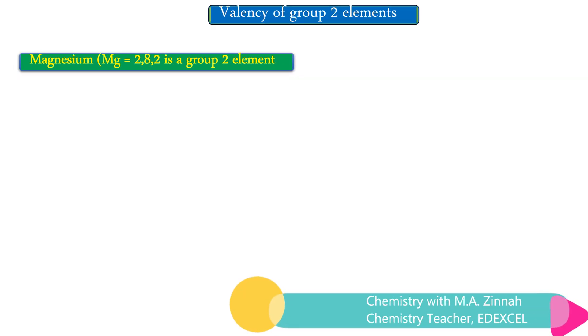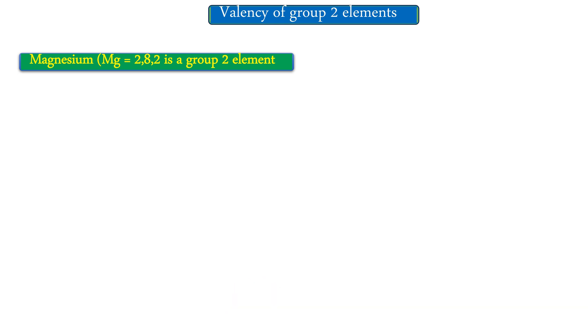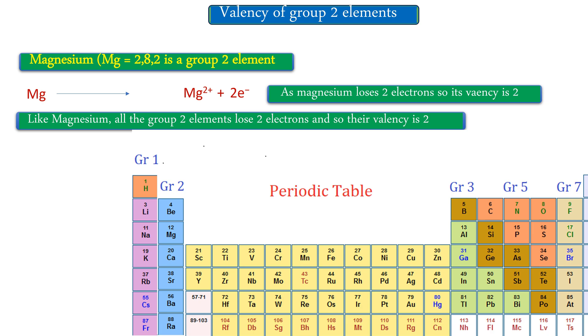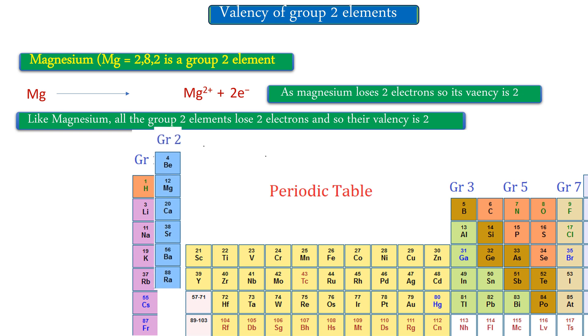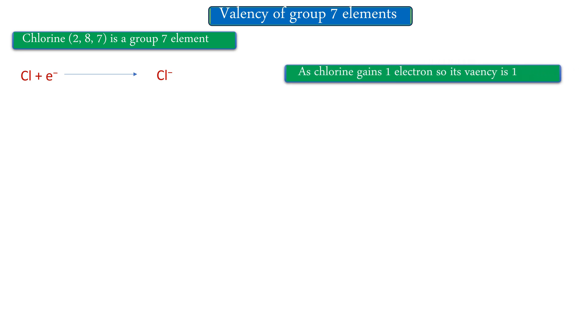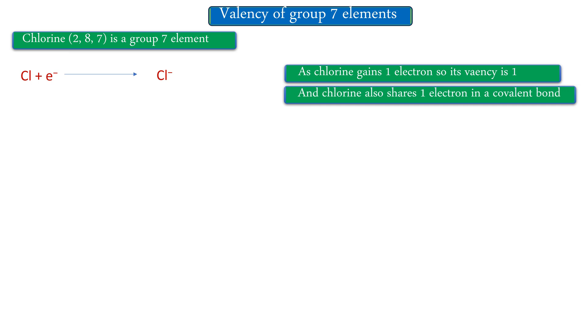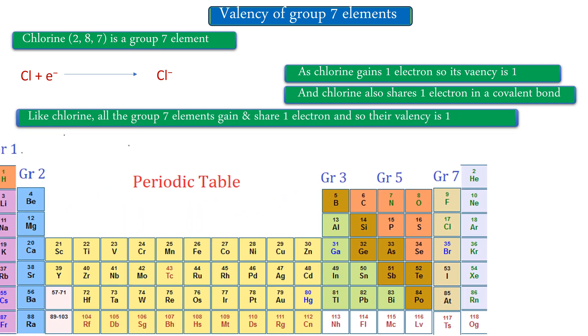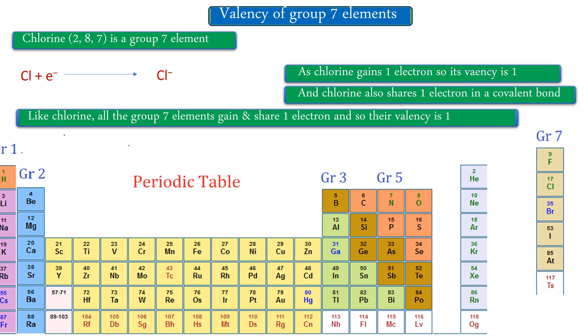For group two elements, take magnesium with electron configuration 2, 8, 2 — two electrons in the outermost shell. Magnesium loses two electrons, so its valency is two. All group two elements lose two electrons and have valency two. Now for non-metals — group seven elements, the halogens. Take chlorine: it has seven electrons in the outer shell, so it gains one electron. As chlorine gains one electron, its valency is one. Not only chlorine — all group seven elements gain one electron (or send one electron for sharing in a covalent bond), so all have valency one, like group one metals.